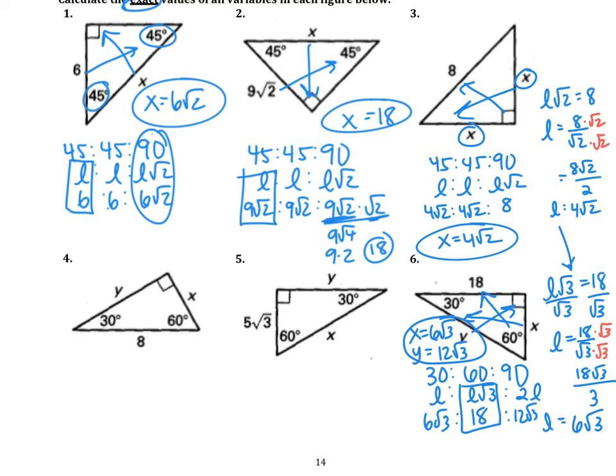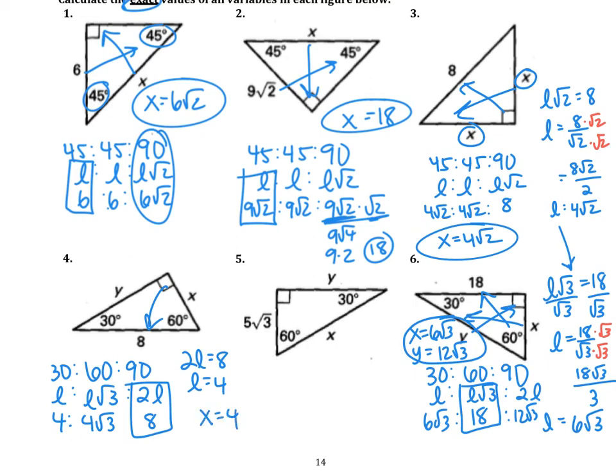Okay, question 4. You should have used a 30, 60, 90. So we get L, L root 3, 2L. We know the side across from the 90 is 8. So underneath the 90, you write 8. Don't double it. Write what you actually have. This tells us that 2L equals 8. If we divide by 2, we get L equals 4. So then we have 4 root 3. Okay, X is across from the 30. So our X is that 4. And our Y is that 4 root 3.